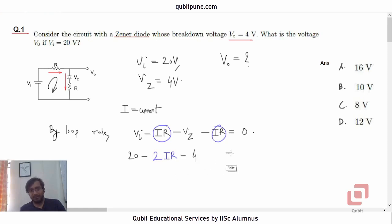How much is Vz? 4. This is equal to 0. 20 minus 4 is 16. And 2IR, it will go to the other side. So we will get IR as 16 by 2 or 8V.